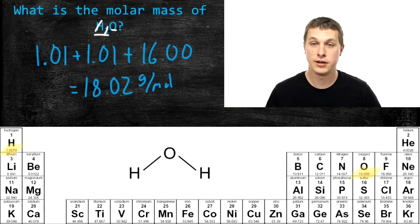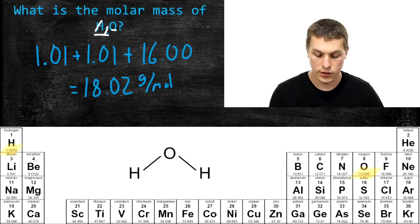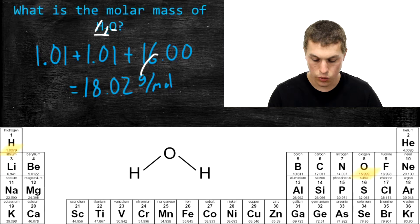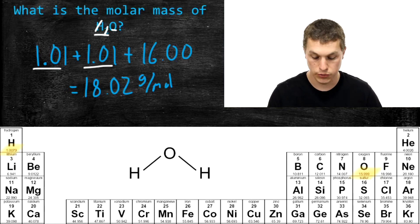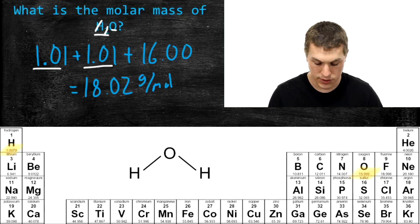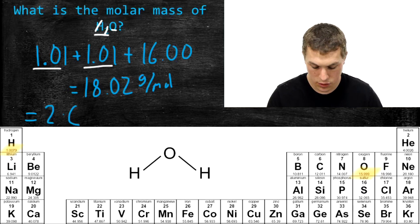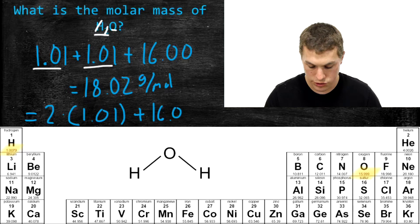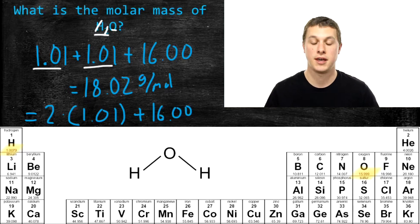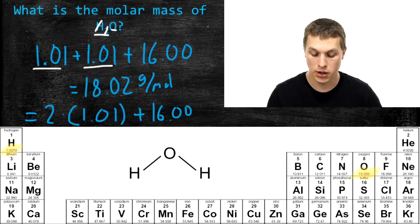Now there's a trick to simplify this calculation. Notice that I have 1.01 twice, so instead of just adding 1.01 and 1.01, I can use multiplication. I could write the same thing as 2 times 1.01 plus 16. That's a helpful shortcut, and it's particularly helpful when you start to get tons and tons of atoms in a molecule.